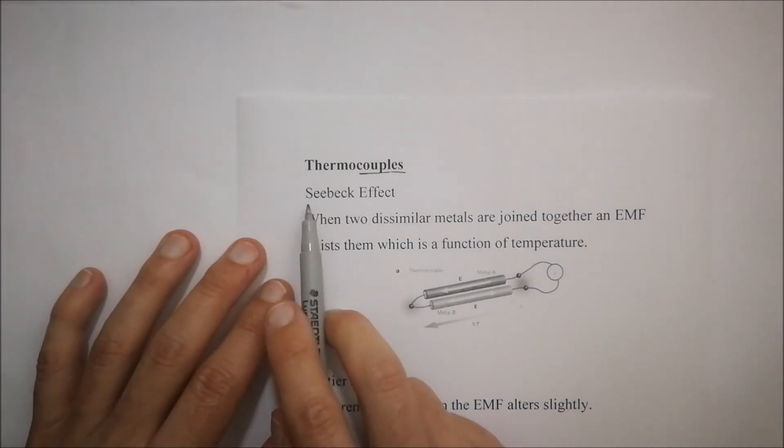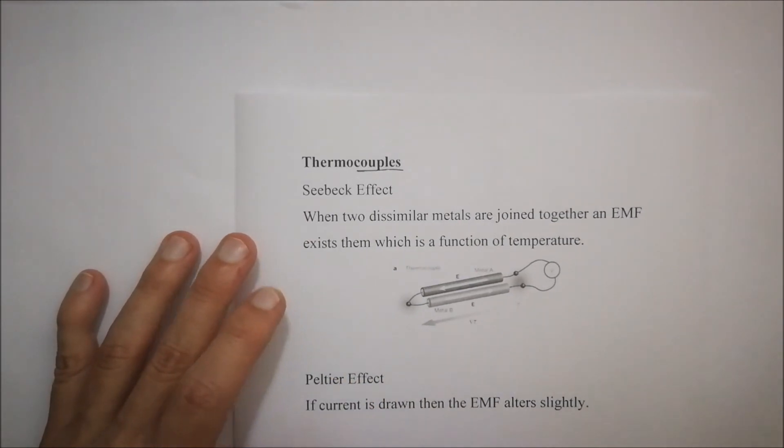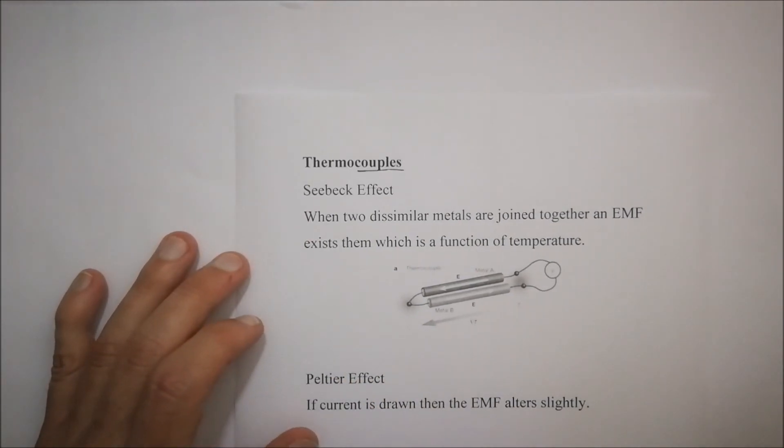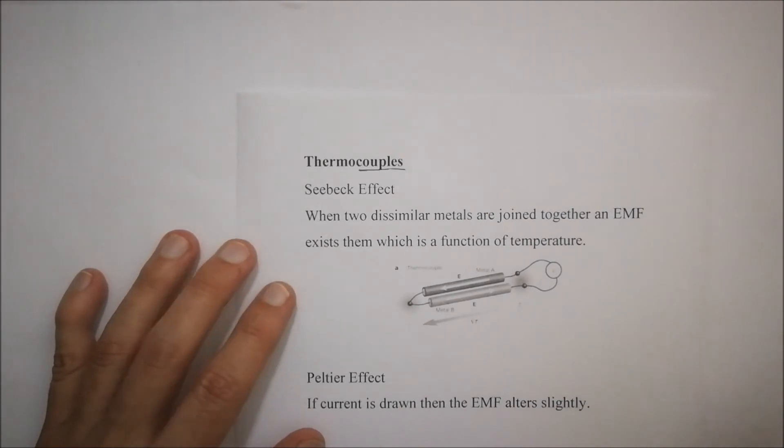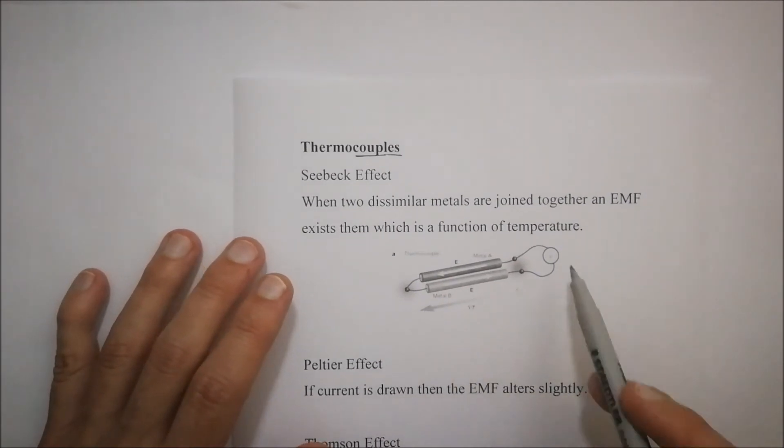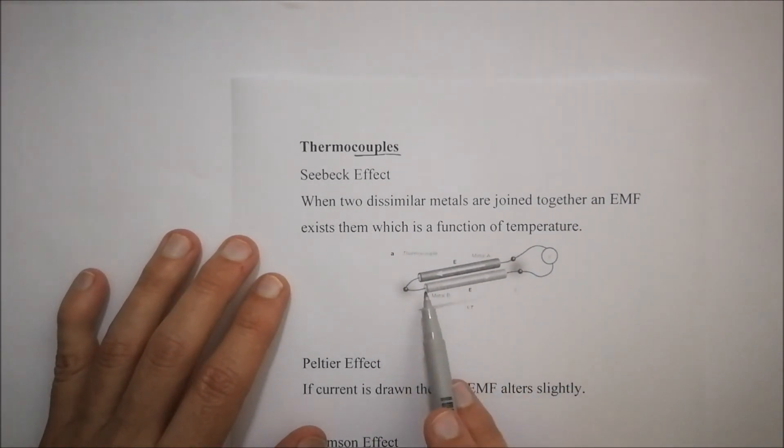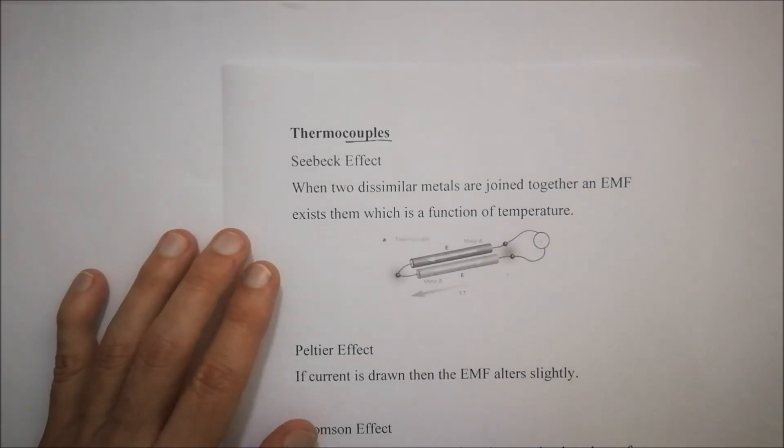You get a Seebeck effect. The Seebeck effect is when two dissimilar metals are joined together, an electromotive force or a voltage exists between them, which is a function of temperature. And so this would be a typical example. You've got metal A and metal B. They're joined together and there's some voltage that comes out over there.